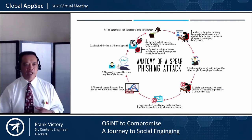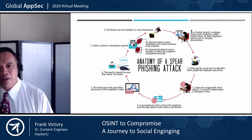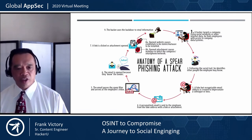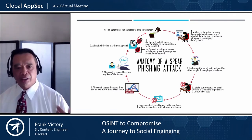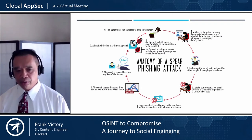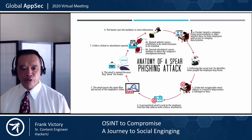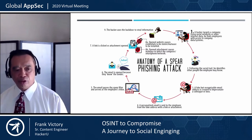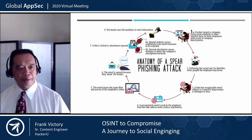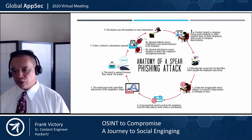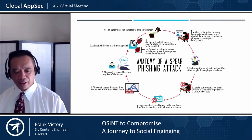We're going to go ahead and spearfish this person. The graphic here shows the anatomy of a spearfishing attack — we're going to target social networks and the company, follow the social trail, use an email address, hopefully pass through the spam filter, get the email opened by the recipient, have a link clicked, and then the hacker uses a backdoor to exfiltrate the information.